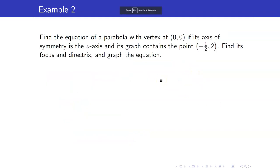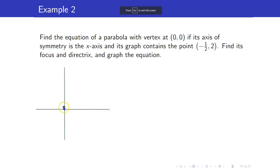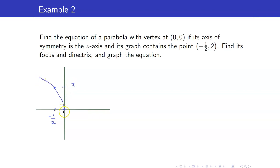Next, let us find the equation of a parabola with vertex at (0, 0), if its axis of symmetry is the x-axis and its graph contains the point (negative 1 half, 2). This is negative 1 half and this is 2, so the parabola looks like this. If it's opening to the left, what is the form of this one?